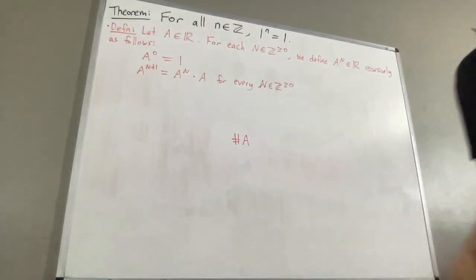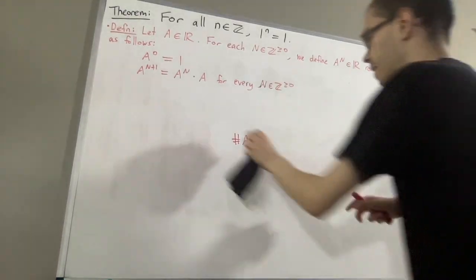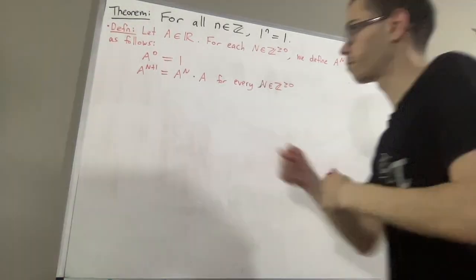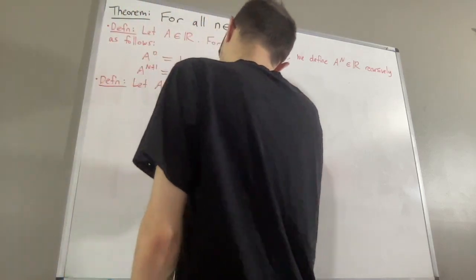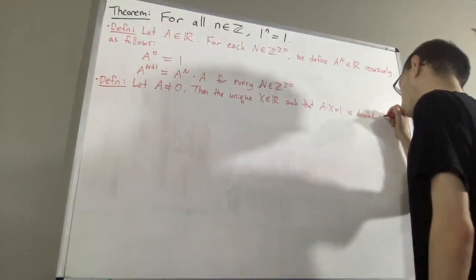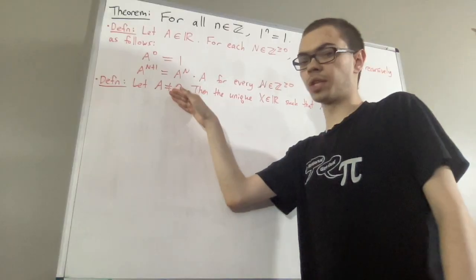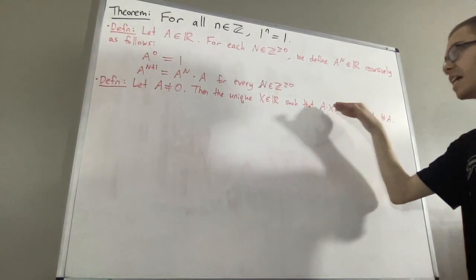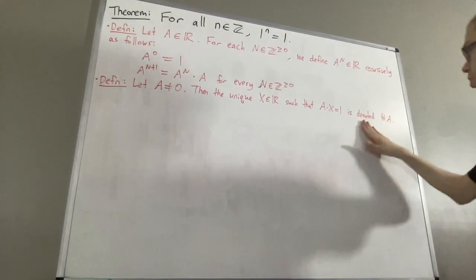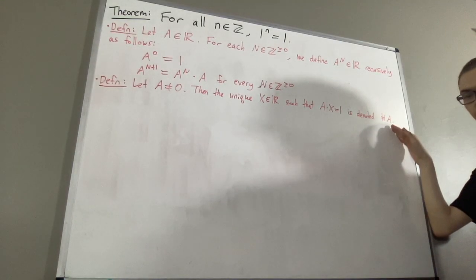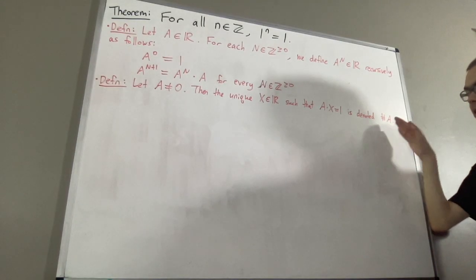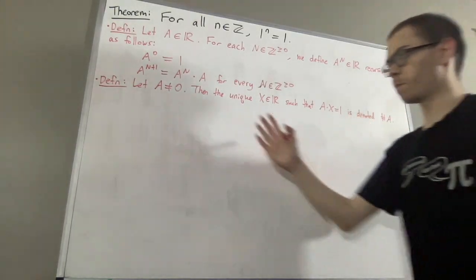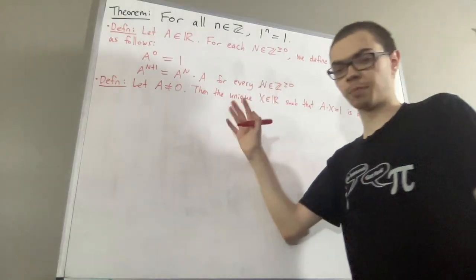If you recall, the definition of the reciprocal of a non-zero real number is as follows. Let a be a non-zero real number. Then, the unique real number x with the property that a times x is equal to 1 is denoted by hashtag a. That's the reciprocal of a non-zero real number a. From here, we define negative integer exponents.